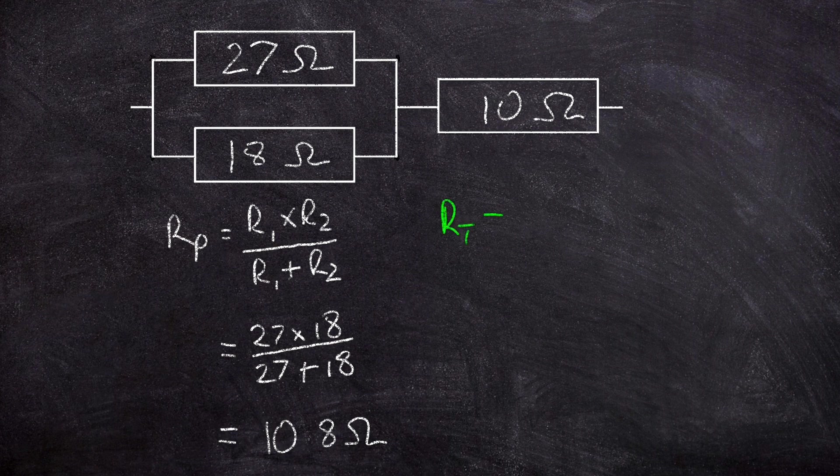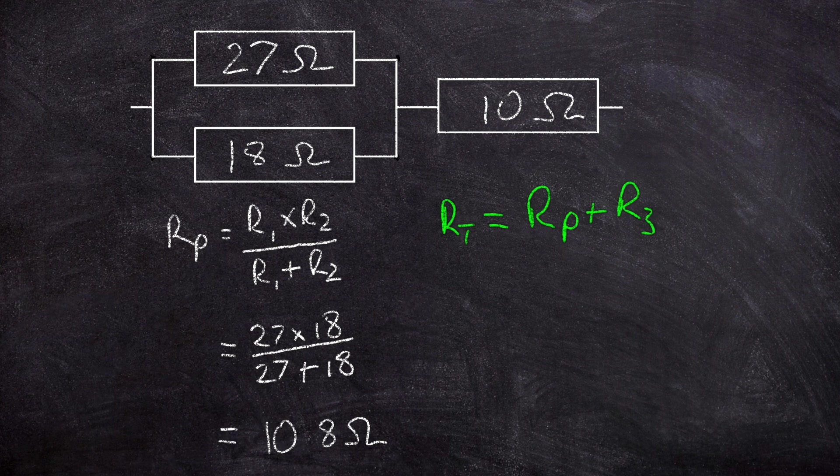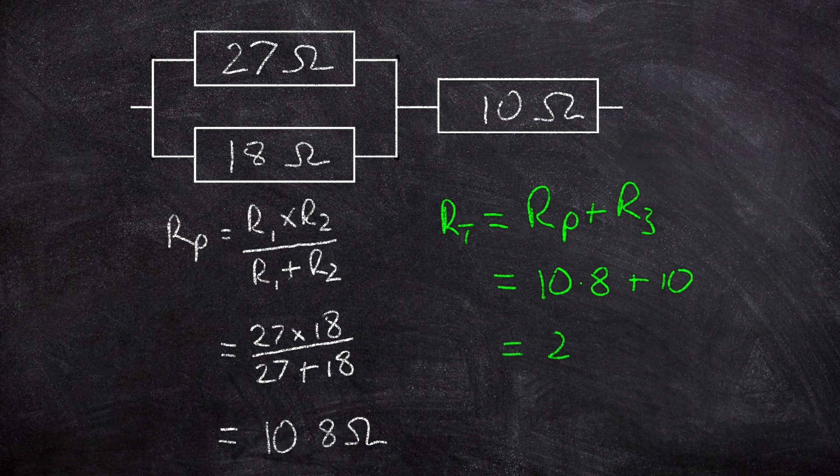And to calculate the total resistance of the circuit then couldn't be simpler. We just say that the total resistance is going to be equal to, in this case RP plus, and I'll arbitrarily call this resistor R3. And if we do that calculation we can see we're going to end up with 10.8 plus 10. So we've just replaced RP with the value that we calculated down here and we replaced R3 with the value of this resistor here, and I don't think we need the calculator up to realize that that's going to come to 20.8 ohms.